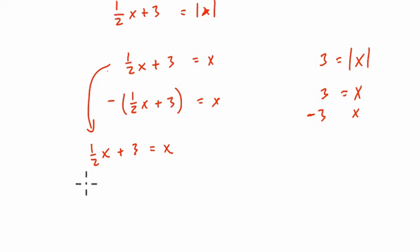Isolating x, we subtract 1 half x from both sides, and we get 3 equals 1 half of x. So in one case, multiply both sides by 2, x equals 6.